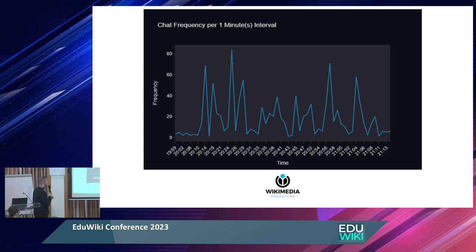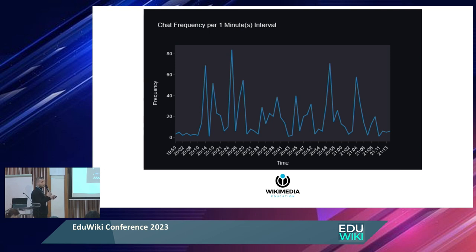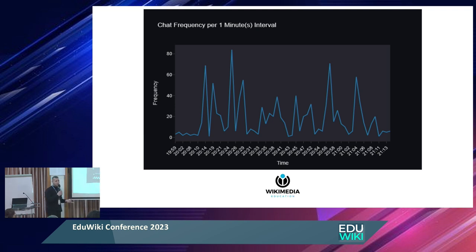This chart shows chat frequency per minute — the messages sent in the chat. At the beginning, students weren't sending anything as they were just joining. Then when I asked if my voice was clear, they sent many messages. When I explained something and asked for questions, they asked. In one section, they had too many questions — that means the educational material there was not sufficient and I couldn't address all their challenges, so I need to modify that material.